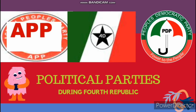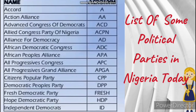Here is a list of some registered political parties in Nigeria today: Accord, Action Alliance (AA), Advance Congress of Democrats (ACD), Alliance Congress Party of Nigeria (ACPA), Alliance for Democracy (AD), Africa Democratic Congress (ADC), African People's Alliance (APA), All Progressives Congress (APC), All Progressives Grand Alliance (APGA), Citizens Popular Party (CPP), Democratic People's Party (DPP), Fresh Democratic Party, Hope Democratic Party (HDP), and Independent Democrats (ID).